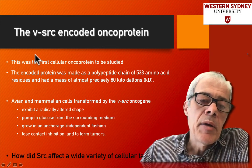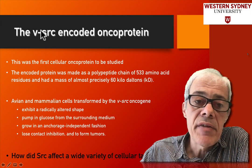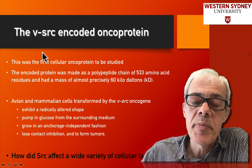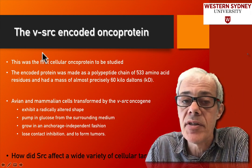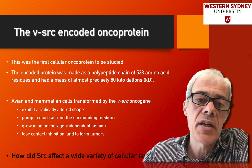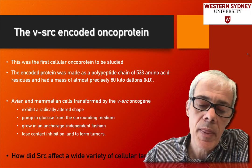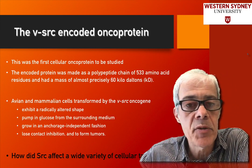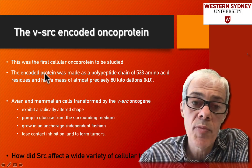Src was originally found in a viral sequence, and it was then identified as a human sequence that had been picked up by the virus. When the Src protein was studied from the human genome, it was identified as being an important oncoprotein.